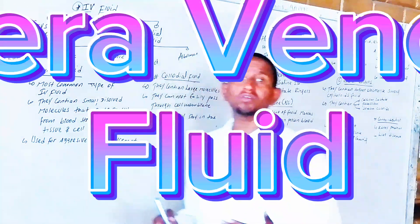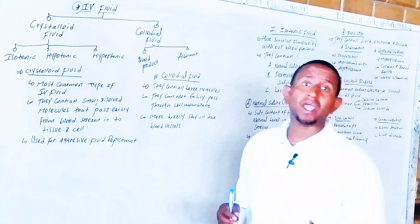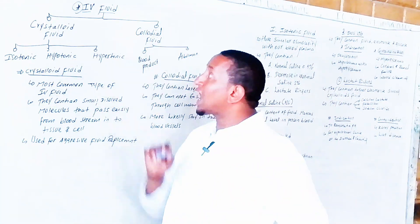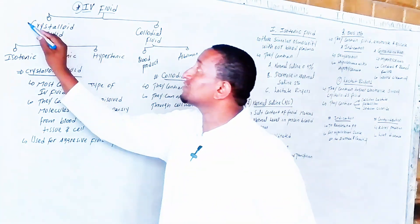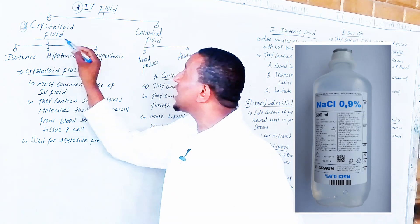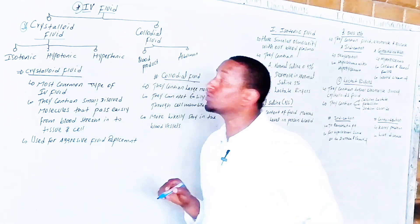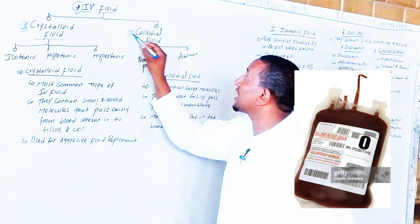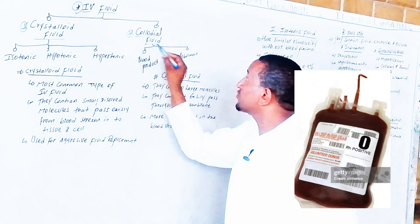What do you mean by IV fluid? How many kinds of IV fluid are there? IV fluid can be classified into two. The first one is a crystalloid fluid. The second one is colloidal fluid.